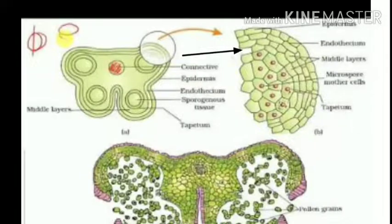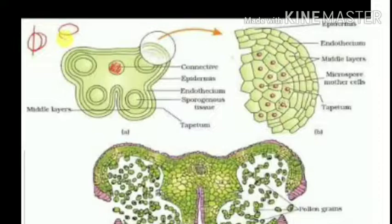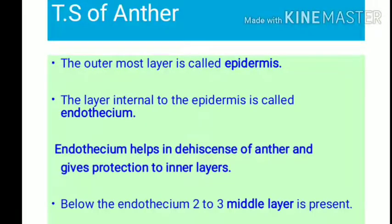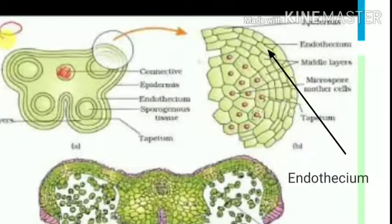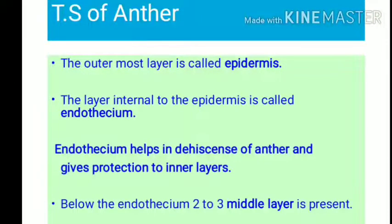The outermost layer of the anther wall is called the epidermis. Internal to the epidermis is a layer called the endothecium. The endothecium helps in dehiscence of the anther and gives protection to the inner layers.